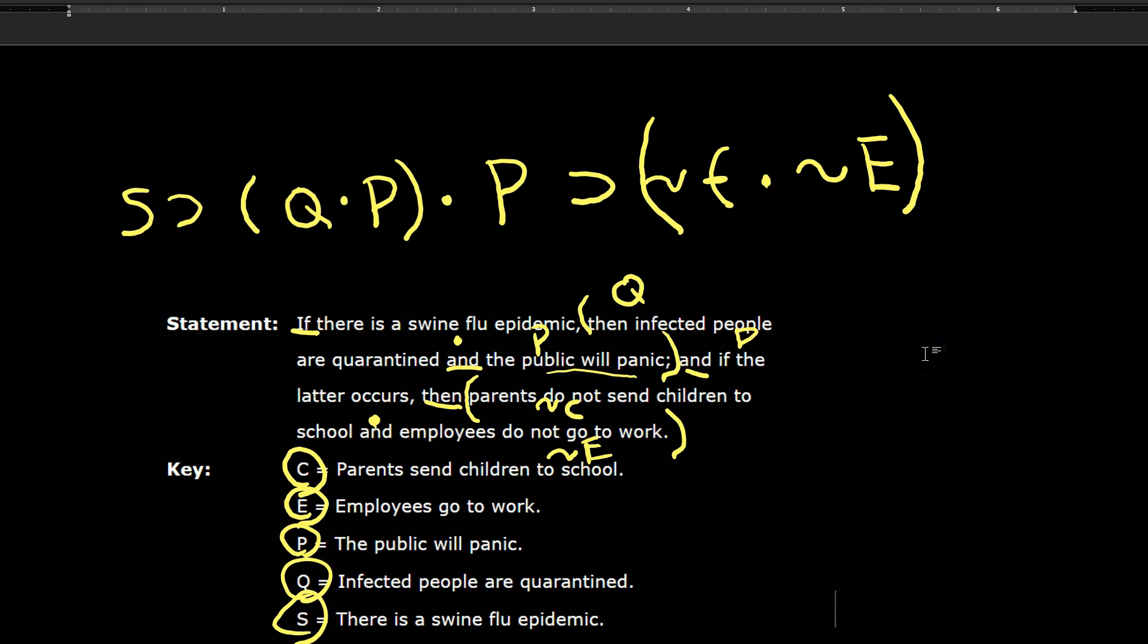So this looks pretty good so far, but you can see that I have left an ambiguity in here. I have too many sentence letters that it's left ambiguous if what I'm saying is if S then Q and P and P then this, or if I'm saying if S then Q and P and if P then not C and not E. So clearly it's the latter.